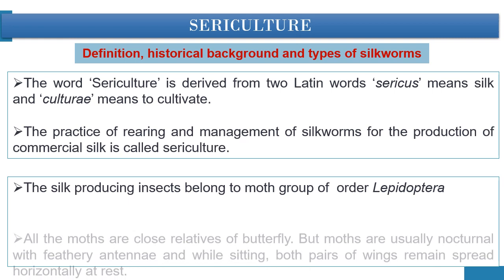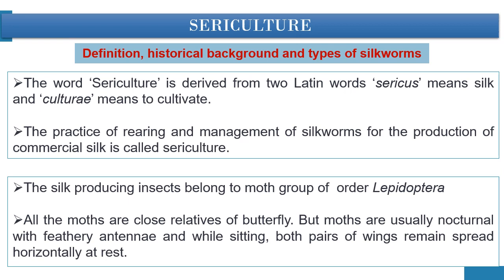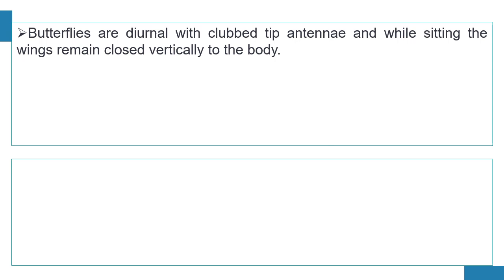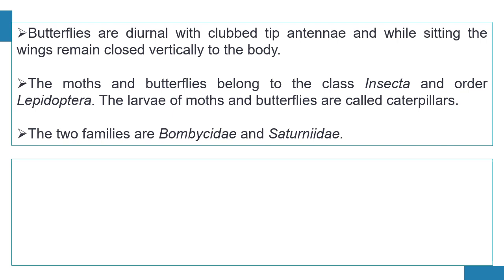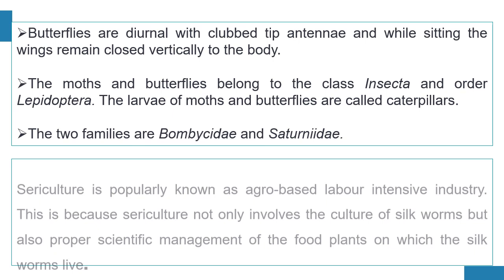All the moths are close relatives of butterflies, but moths are usually nocturnal with feathery antennae and while sitting, both pairs of wings remain spread horizontally at rest. Butterflies are diurnal with club-tipped antennae and while sitting the wings remain closed vertically to the body. The moths and butterflies belong to the class Insecta and order Lepidoptera. The larvae of moths and butterflies are called caterpillars. All silkworms generally belong to two families: Bombicidae and Saturniidae.